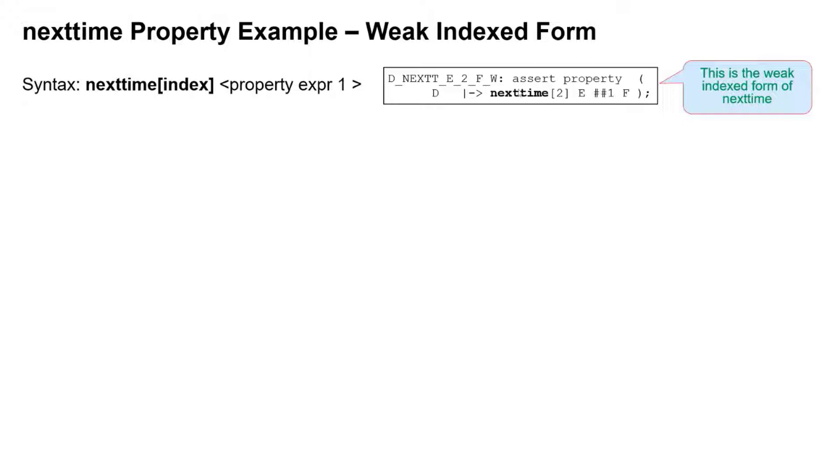So here's a syntax example. This time our index is two in this case, and we've got a sequence on the right-hand side of this. So it's used in a normal kind of property, and we're going to see what the behavior of that is in a moment.